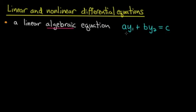So here, A, B, and C are some given constants—they're known—and y1 and y2 are some unknown variables. If I want to solve the equation, I need to find values of y1 and y2 which make the equation true.